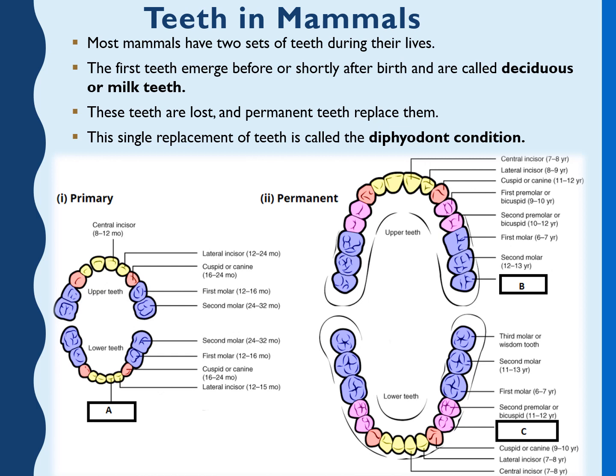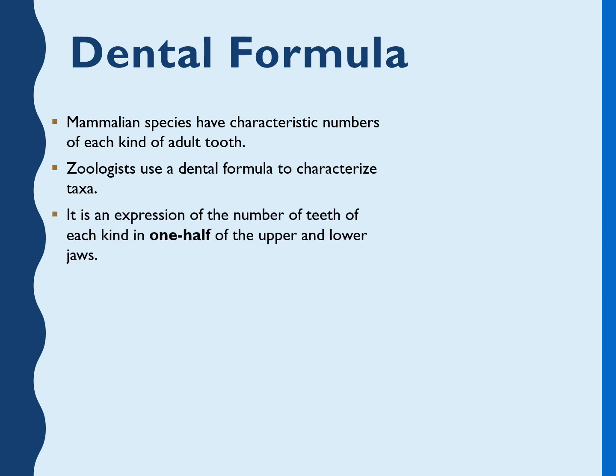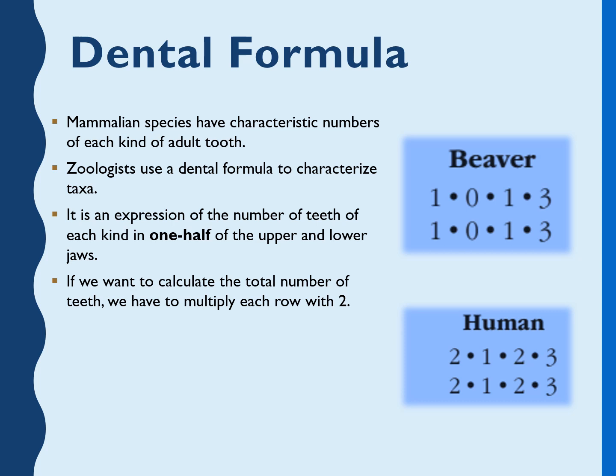Some people's wisdom teeth erupt later on. Each mammalian species has a characteristic number of each kind of adult tooth. Zoologists use a dental formula to characterize this. The dental formula is defined as the number of teeth of each kind in one half of the upper and lower jaw — for example, as seen in figures for beaver and human.